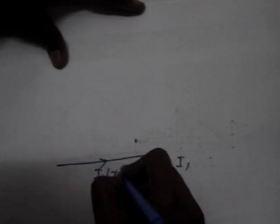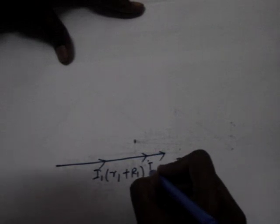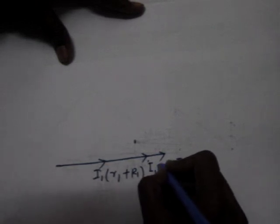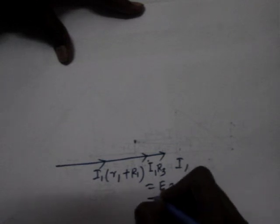This one is I1, this one is I1 into small r1 plus capital R1. So this is E3 - I1 R3 is equal to E3, which is equal to Ic by j omega C. So this one will be the inductive drop, I1 omega L1. This one is E1.